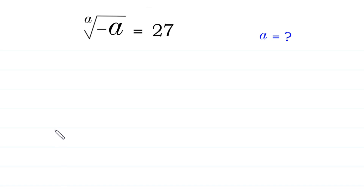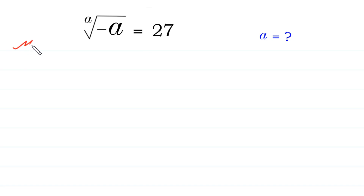Hello, welcome to how to solve this very nice radical equation: the ath root of negative a is equal to 27. We will solve it by two methods. So, let us start with Method 1.